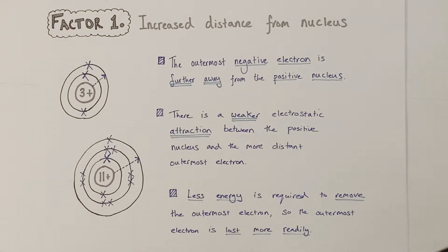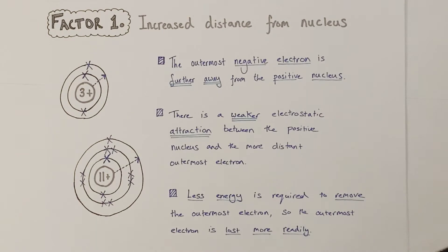To explain how this influences reactivity, as you descend group 1, the outermost negative electron will be further away from the positive nucleus because there will be more and more inner shells between the nucleus and the outermost electron. This will mean there will be a weaker electrostatic force of attraction between the positive nucleus and the more distant negatively charged outermost electron. This will mean that less heat energy will be required to remove that outermost electron from that atom.